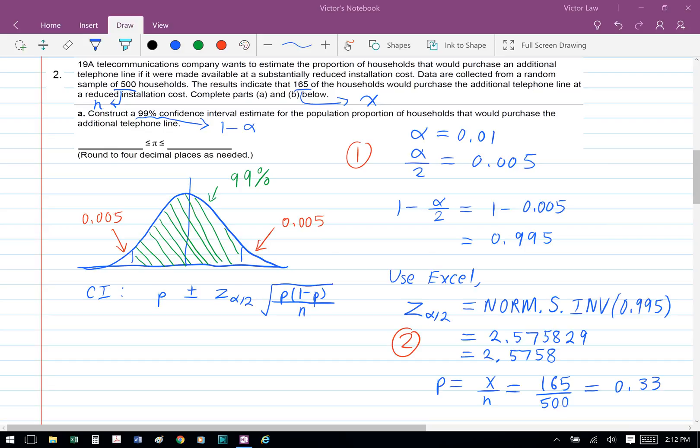Next we're going to use the proportions confidence interval formula. So we have p plus minus z times square root p bracket 1 minus p over n, and we're going to use Excel to help us find z. So we're going to set equals to norm.s.inv and then bracket 0.995, and we're going to get 2.5758.